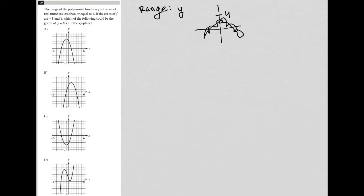So then the next part of this sentence, or the next sentence says, if the zeros of f are negative 3 and positive 1. Okay, so zeros is code for x-intercepts, right, which is basically—I mean, they're called zeros because that's where the y value equals 0.